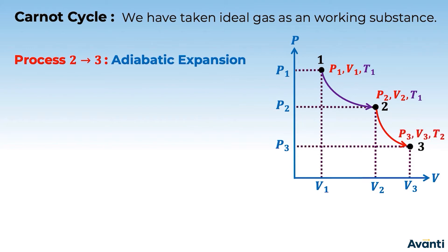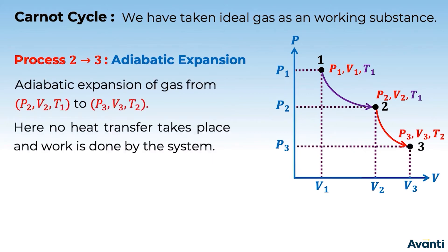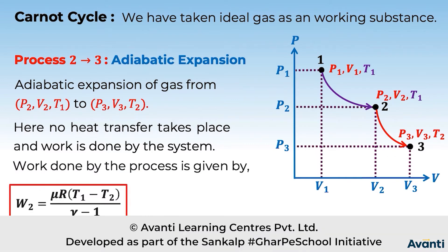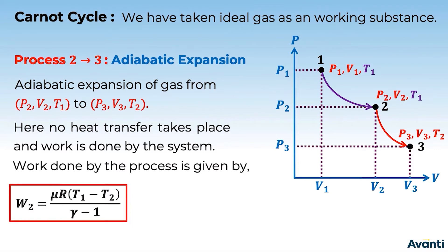In adiabatic expansion, both pressure and temperature change. It is worth noting that heat transfer does not happen because it is an adiabatic process, so Q = 0. The work done for an adiabatic expansion follows the formula: μR(T1 − T2) / (γ − 1).